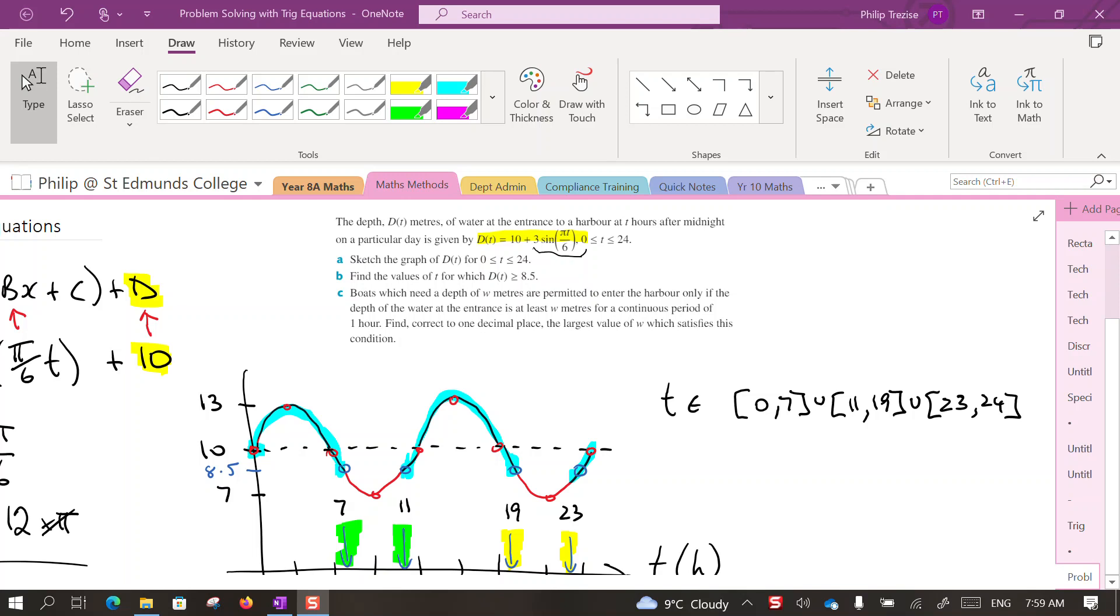Hi everyone, welcome back to part three, the final step. It says boats need a depth of water W to enter the harbor, and they only let them do this if the depth is that deep for a continuous period of one hour. Now we saw last time an example of this. If we look at this interval here, the depth was 8.5 and the depth was at least that much for eight hours between 11 and 19.